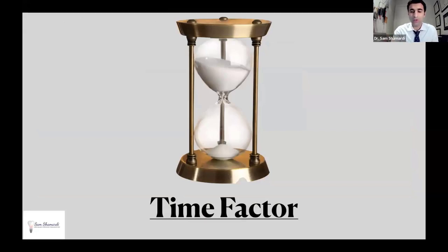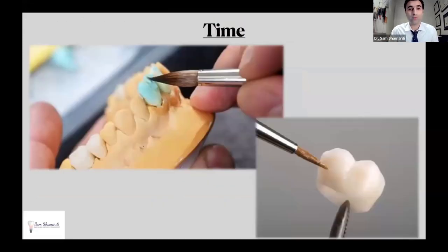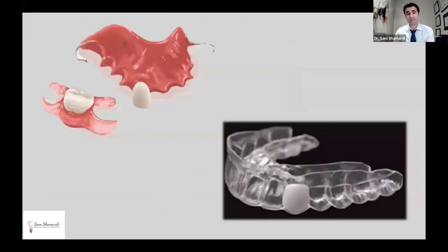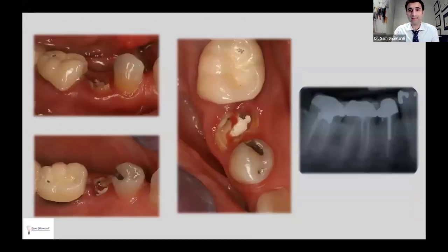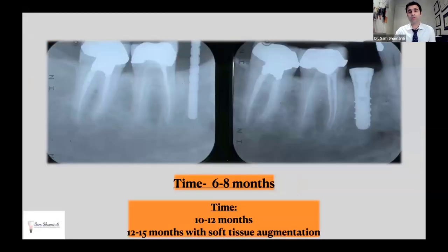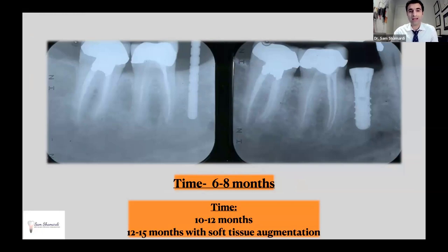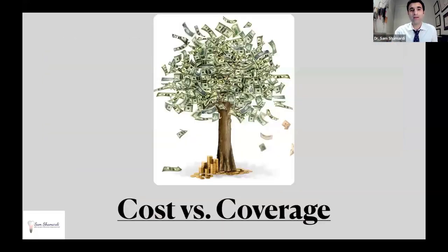Another factor our patients always complain about is time. Patients want their work completed yesterday, but it's not that simple. There's a lot of prep work, lab work involved. For me as a periodontist, I have to put patients in provisional appliances for long periods of time. Typical cases involve teeth that have to be removed and grafted through the implant process — at a minimum six to ten months. Adding soft and hard tissue augmentation, even a single tooth can take over one year.